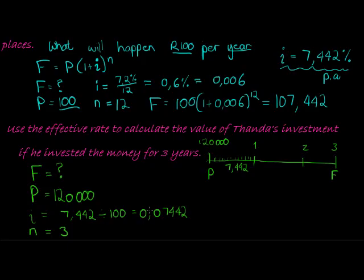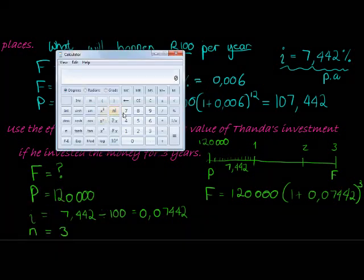So if I put all of this in I get 120,000 times (1 + 0.07442) to the power of 3. That's going to give us our answer. Let's calculate it: 120,000 times...